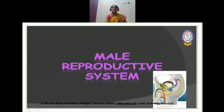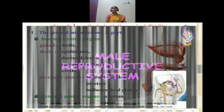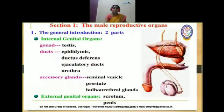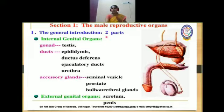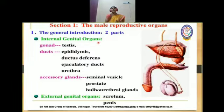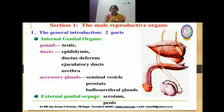We are going to start with the structure of the male reproductive system. The male reproductive system is divided into two parts: internal genital organs and external genital organs. Internal genital organs are the organs located inside the body, whereas external genital organs are those which open to the exterior.